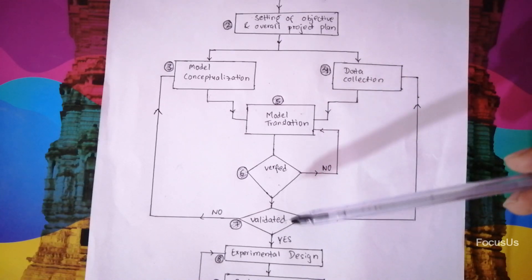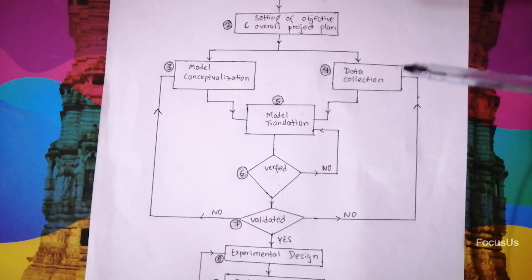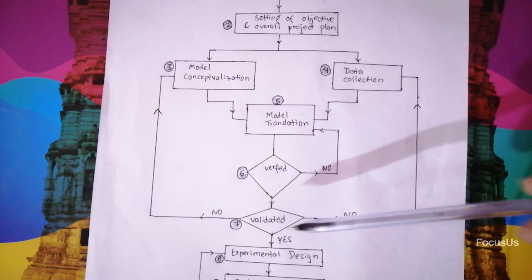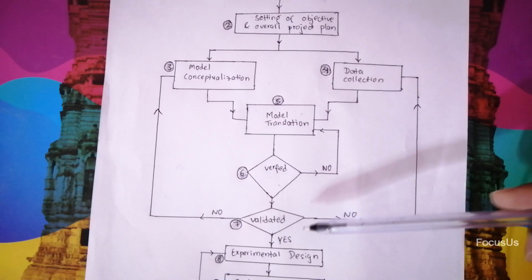So if our validation fails either our model conceptualization is wrong or the data collection is wrong. It may be also the case that both of these were incorrect. So we need to go back and see what was incorrect and continue the process again. But if the validation is successful, then we go to the eighth point.